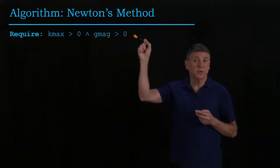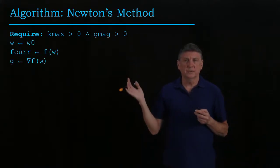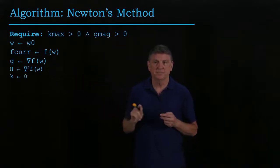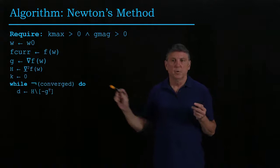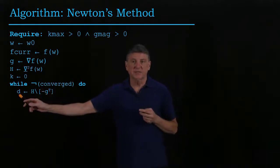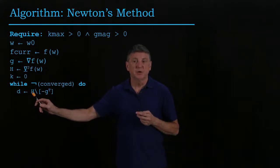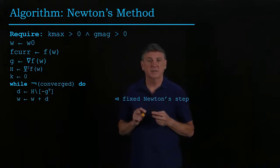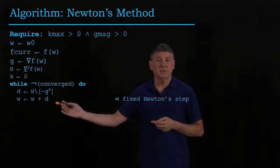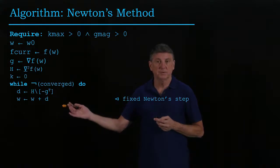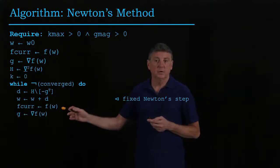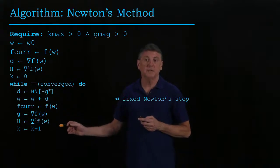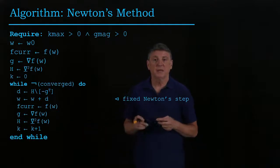What does this look like as an algorithm? The setup requirements are approximately the same as before, but now we must also compute the Hessian at each estimate. While not converged, we set the descent direction — in MATLAB notation — by solving the H matrix against the negative gradient transposed. We perform the step with step size equal to one, as computed from Newton's method. We then note the current function value, recompute the gradient, recompute the Hessian, increment the iteration variable, and the loop is done.